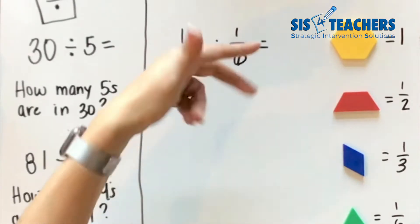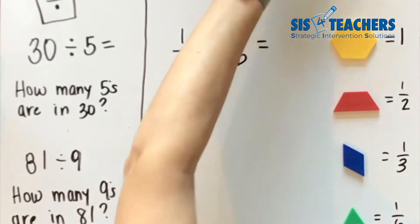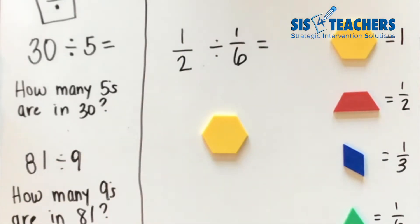When we're trying to solve this, we end up getting a whole number. Somebody might tell you to just flip it and then multiply, which will get you the same answer, but we want you to understand why that is. We're going to show our hexagon as our whole just so you can see it in relationship to what we're talking about.